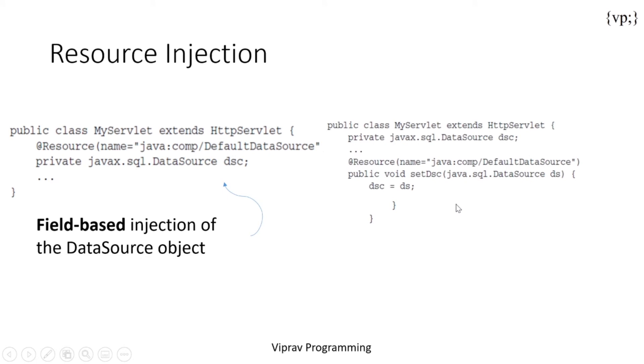There is another way that you can do this, however, as a method based injection of the data source object, which means that you put your @Resource right on top of your method right here instead of putting it right on top of your field. This is why this is called the method based injection and this is the field based injection.